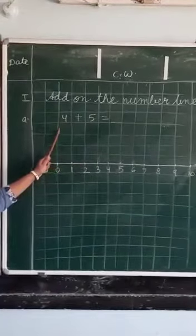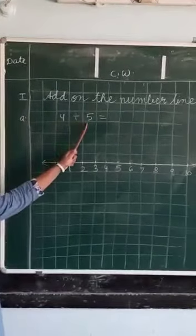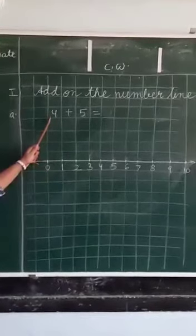Our first number is 4 and second number is 5. We will start with 1st number which is 4. Where is 4?